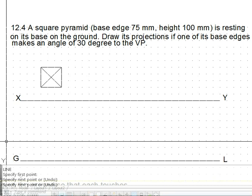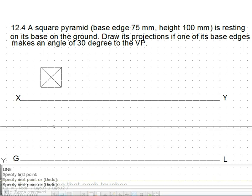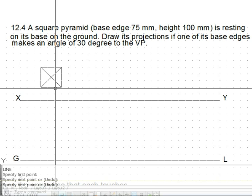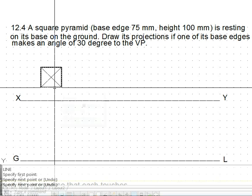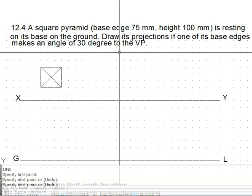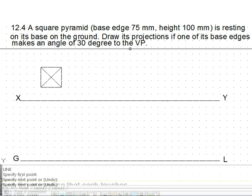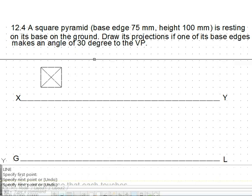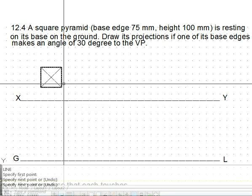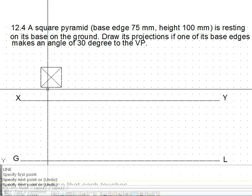So overall this does not satisfy the condition that the base edge makes 30 degree angle. Here one base edge makes 0 degree angle, another base edge makes 90 degree angle.